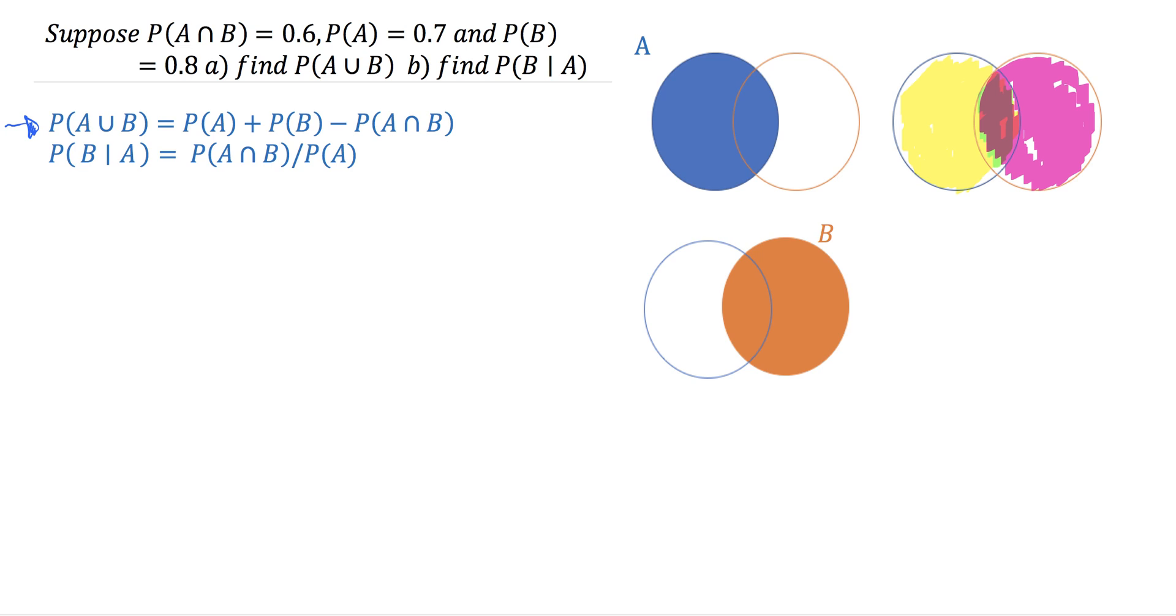Now moving on for part A, you can see that the probability of A union B equals the probability of A, which is 0.7, plus the probability of B, which is 0.8, minus the probability of A intersect B, which is 0.6. So this is 1.5 minus 0.6, which equals 0.9. That's our answer for part A.